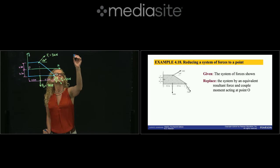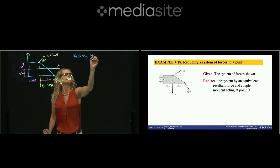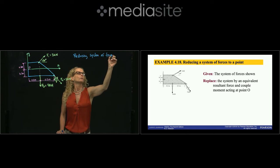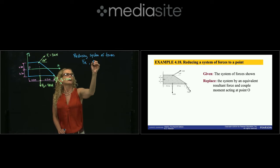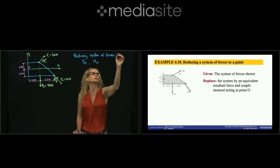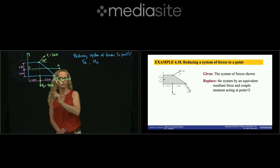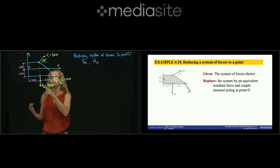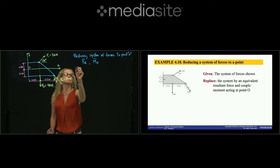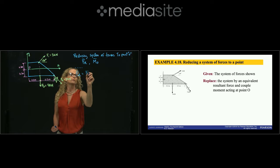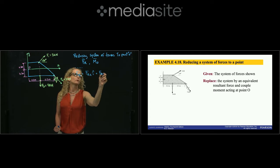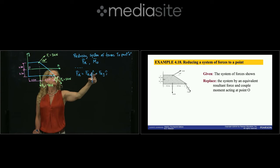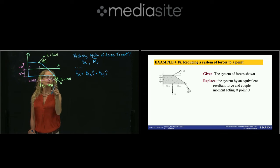Reducing the system of forces to point O means finding the resultant force and the moment with respect to that point, and those are vectors. Since it's a 2D problem, we know that the moment is in the direction perpendicular to the screen in K — it could be negative or positive K. The resultant force will have two components: resultant force in X plus resultant force in Y. To find those, we express each of the three forces in terms of its components.